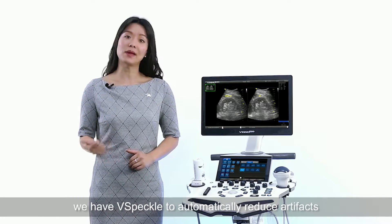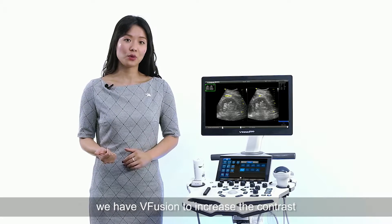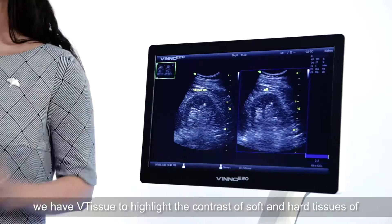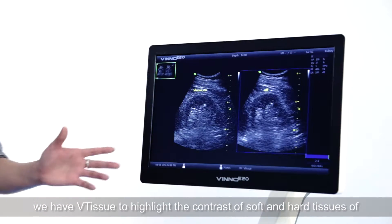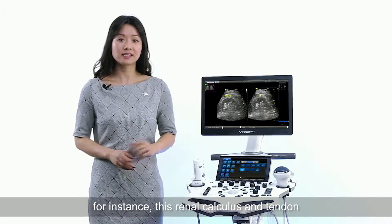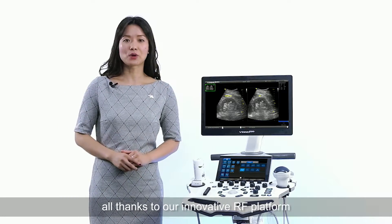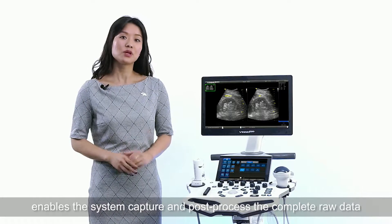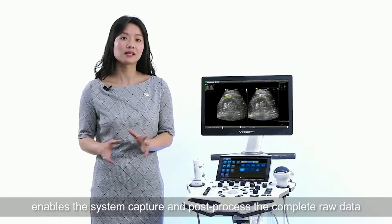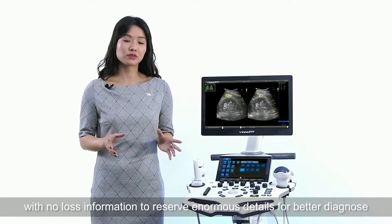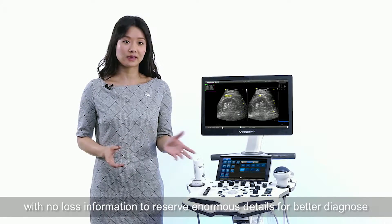We have V-speckle to automatically reduce artifacts. We have V-fusion to increase contrast. We have V-tissue to highlight the contrast of the soft and hard tissue of, for instance, this renal calculus and tendon. All thanks to our innovative RF platform that enables the system to capture and post-process the complete raw data with no information loss to preserve enormous details for better diagnosis.